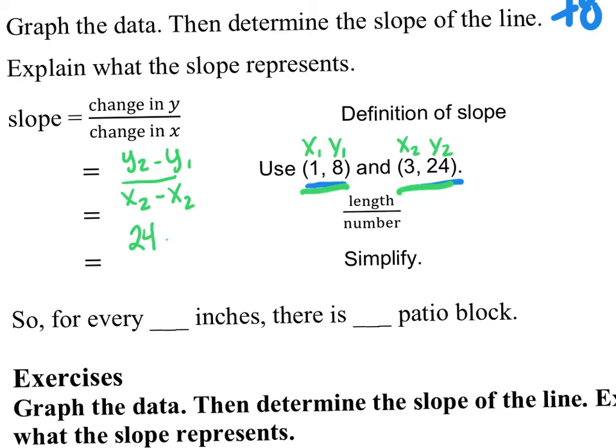So what is y2? I labeled it. What was it? 24. y1 is 8. It comes from right here. Over x2, which is 3, minus x1. Oh, I'm sorry. I wrote 2 there. I meant to write 1. Which is 1. So 24 minus 8 is 16. 3 minus 1 is 2. 16 divided by 2 is 8.